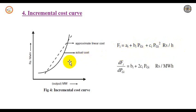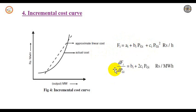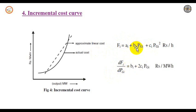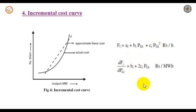The incremental fuel cost is given by taking the derivative of this equation with respect to Pgi. So dfi/dPgi = bi + 2·ci·Pgi, since the constant ai gives 0 and the derivative of ci·Pgi² is 2·ci·Pgi.